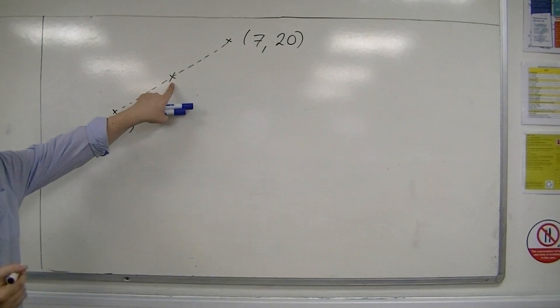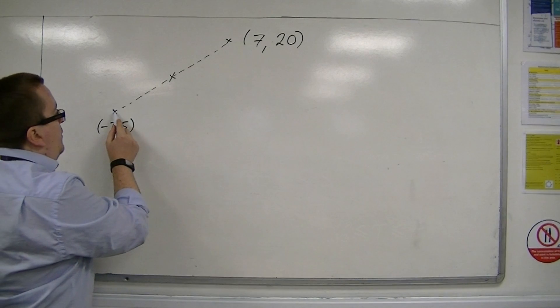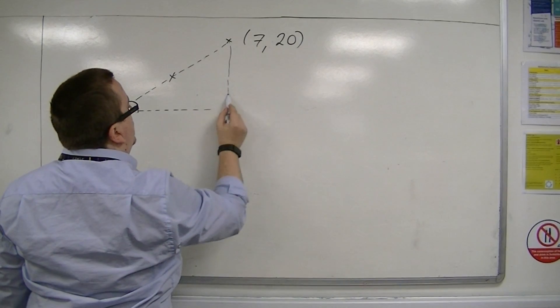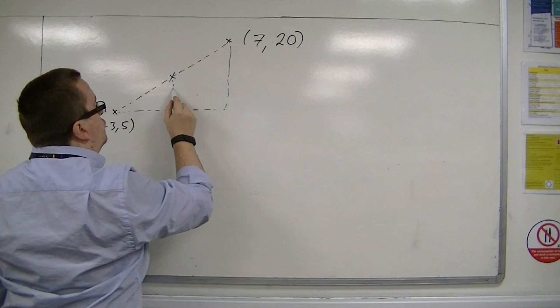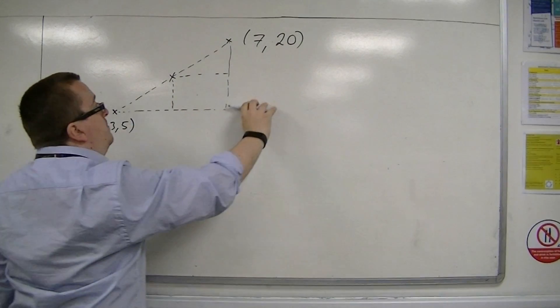And I want the midpoint between these two coordinates. So this point, slap bang in the middle. So what you can do is if you think of this as a right-angled triangle, then you're trying to find the midpoint of the base and the midpoint of the height.